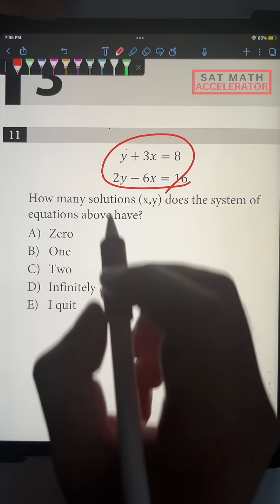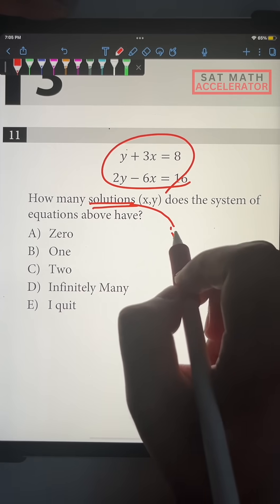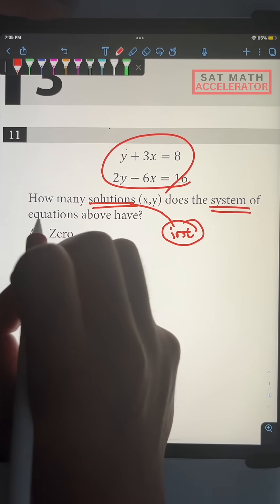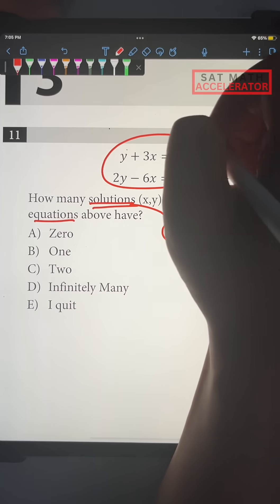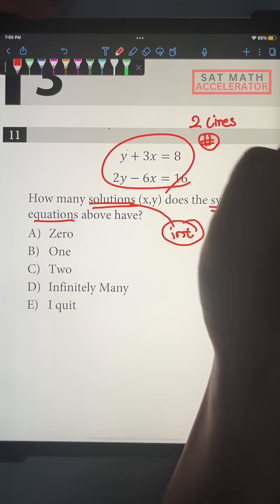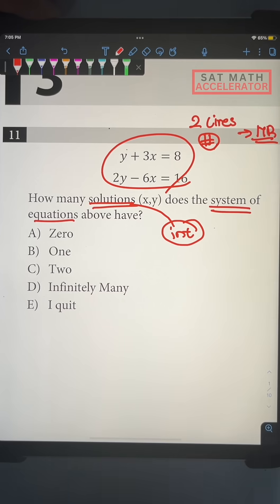You're literally given two lines over here, and the question's asking how many solutions, or in other words, how many intersections does the system of equations above have? When you're given two lines and you're looking for a number of solutions, all you have to do is use something known as the matching rule.